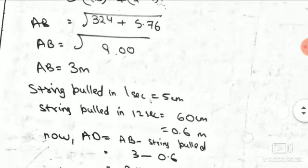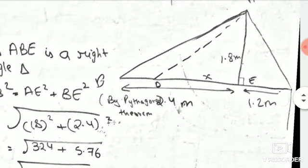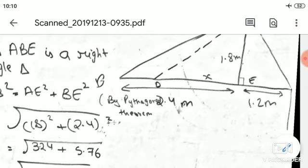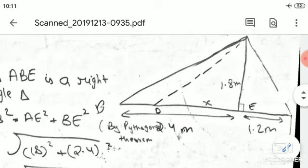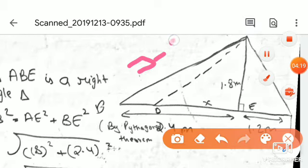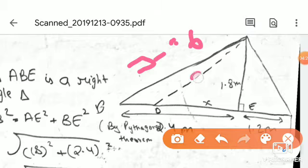Now this distance. First it was 3, pulled 0.6, then the rest is 3 minus 0.6, which is 2.4. Clear?